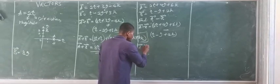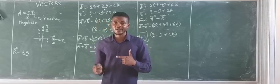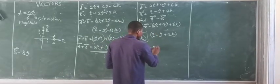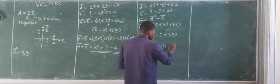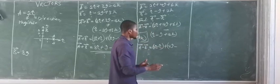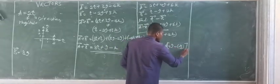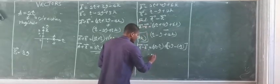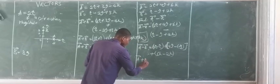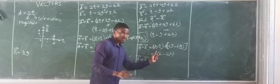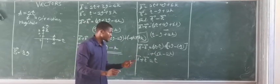Vector A minus vector B: since two vectors can only subtract when they move in the same direction, I have 2I minus I — both in the I direction, so we can subtract. Next is plus 4J minus minus J, giving 4J minus minus J. Finally, 6K minus 2K.